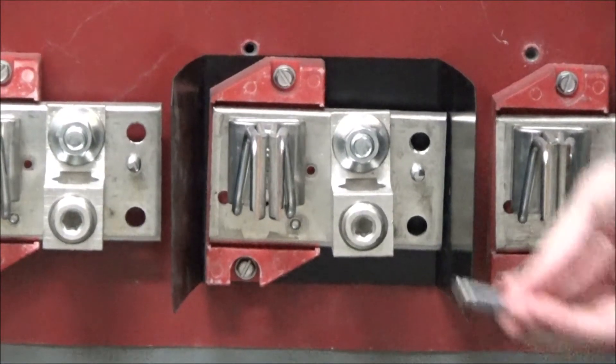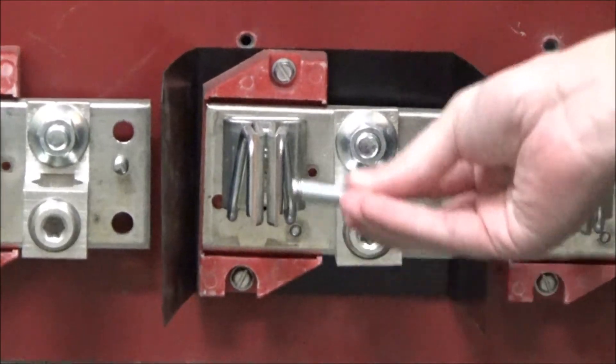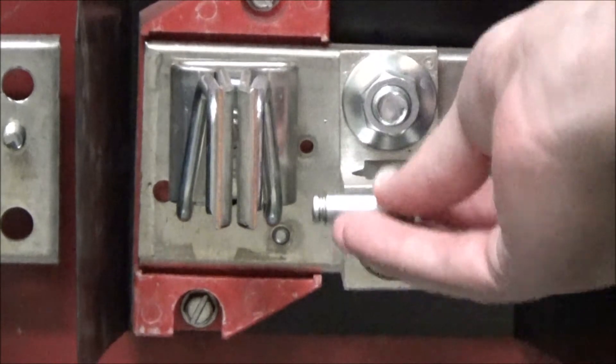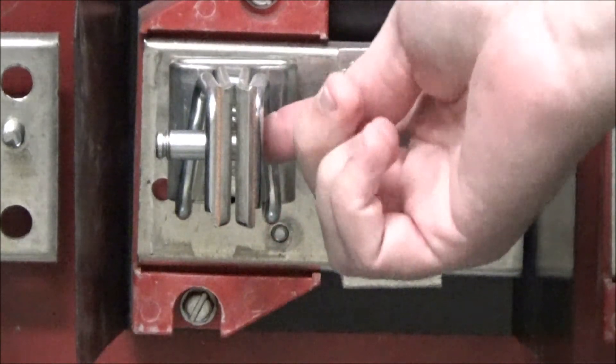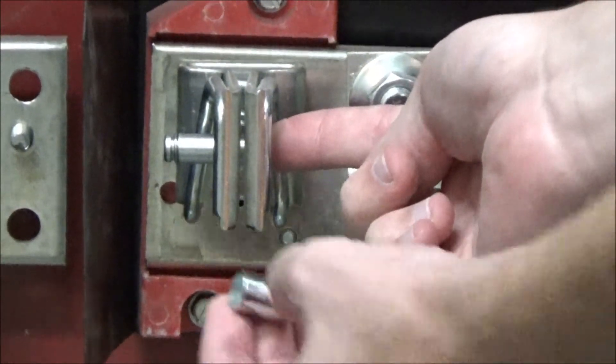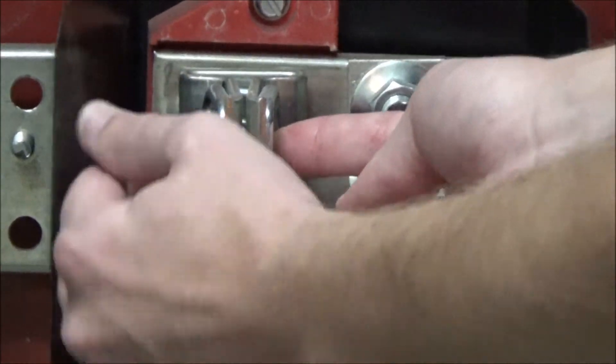To install the class R fuse kit you will slide the pin into the hole in the fuse clip from the lug side and then push the collar onto the pin firmly like so.